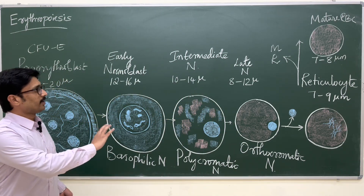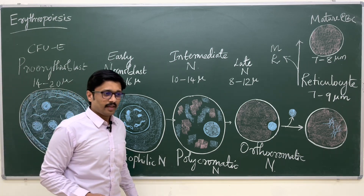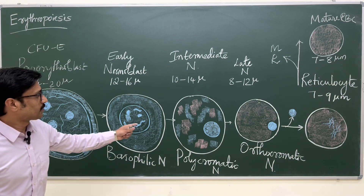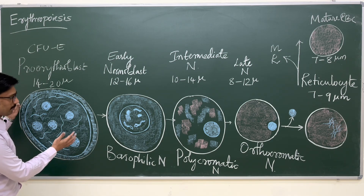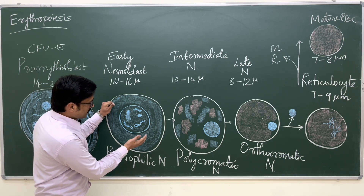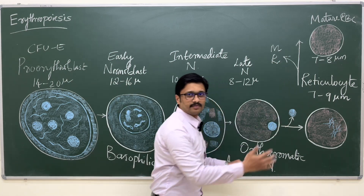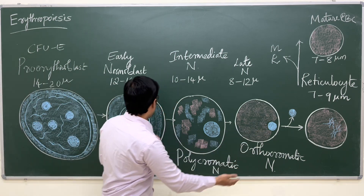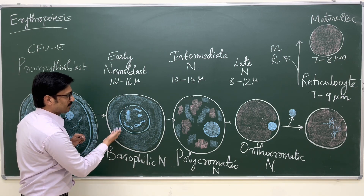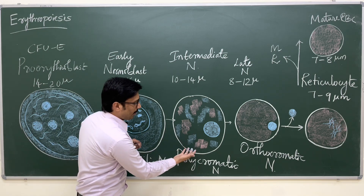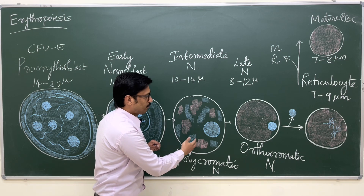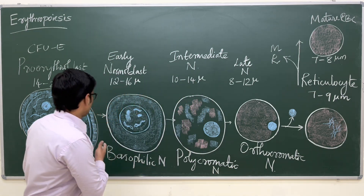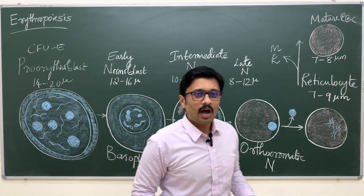In summary, during differentiation to mature RBC: the cell size decreases throughout. The nucleus starts large with multiple nucleoli, gets reduced in size, and is finally expelled. The cytoplasm increases progressively — initially basophilic with only RNA, then polychromatic with hemoglobin and RNA, and finally orthochromatic with only hemoglobin.